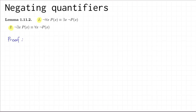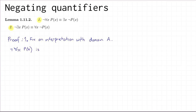We take an interpretation with a domain A — so let's fix an interpretation. What we've got to do is show that the two formulas in part one have the same truth value in this interpretation. So what would it mean for 'not for all x P(x)' to be true in this interpretation? 'Not for all x P(x)' is true in this interpretation if and only if 'for all x P(x)' is false in the interpretation.